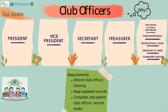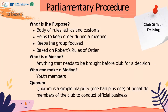When electing club officers, you will need to elect a president, vice president, secretary, and treasurer. If you have enough youth who want to be involved, you can also elect a reporter, historian, parliamentarian, recreational chair, sergeant-at-arms, and community service chair. All club officers will need to attend club officer training, keep updated records required for their specific role, and complete and submit club officer record books annually. Club meetings should include the use of parliamentary procedure, which helps create a sense of ethics and order, keeps the group focused, and is based on Robert's Rules of Order.